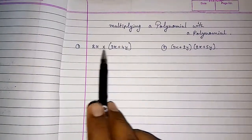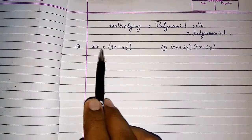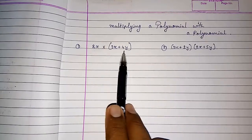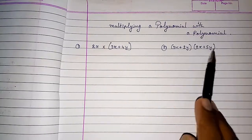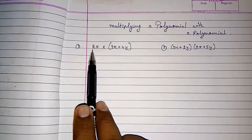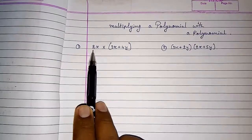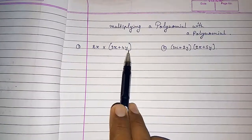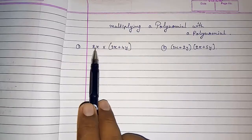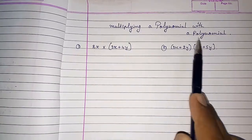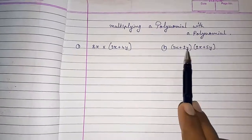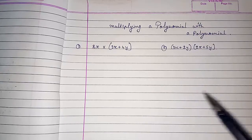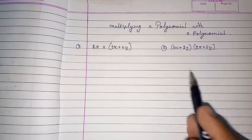Look here. This is also a polynomial. This is also a polynomial. First we are going to solve this, then we are going to solve this. Actually this is a monomial and this is a binomial. So first I will multiply a monomial with a binomial, and then a binomial with a binomial.